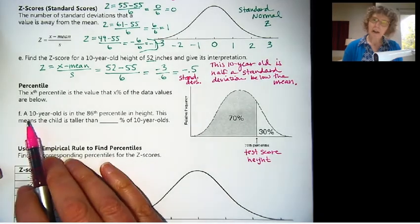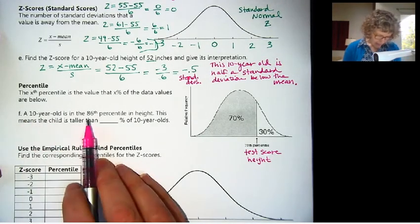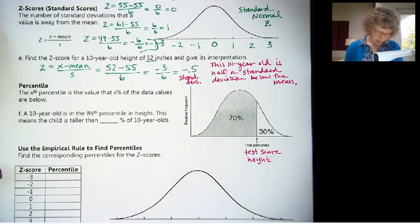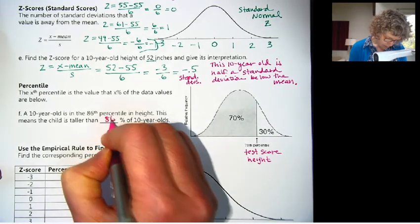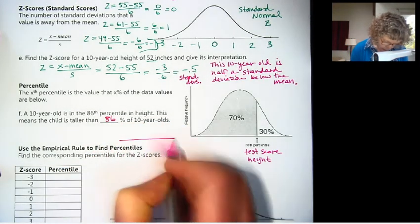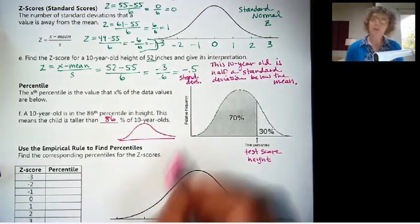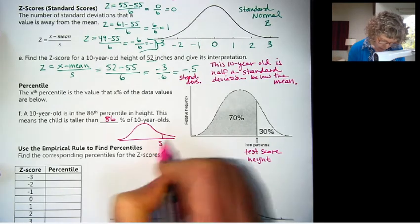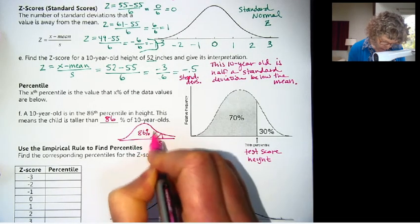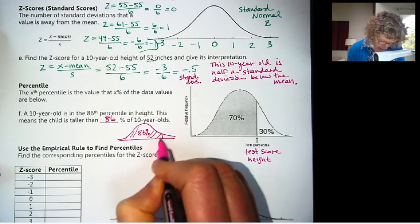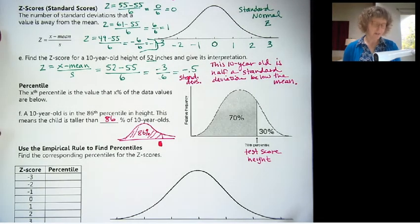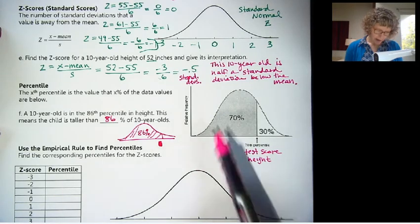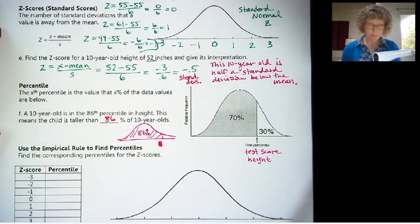So it's not a percentage, it's the actual value that that percentage scored below you. Someone who's in the 70th percentile for weight means 70% of the people, 70% of the population, weigh less than that person, whatever that weight is. Same thing for height. 70th percentile means 70% of the people are shorter than that height. Okay, so the Xth percentile, just any percentile, is the value that that percent of the data values are below. It always goes to the left, it always goes below. Okay, so let's try one out here.